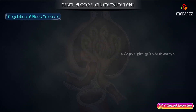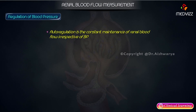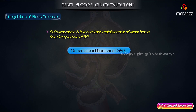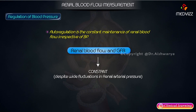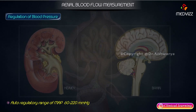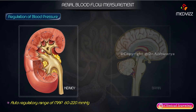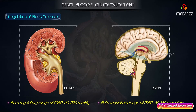Regulation of blood pressure. Autoregulation is the constant maintenance of renal blood flow irrespective of blood pressure. Renal blood flow and GFR remain constant despite wide fluctuations in renal arterial pressure. The autoregulatory range of mean arterial pressure for the kidney is 60 to 220 mmHg, and for the brain is 60 to 160 mmHg.